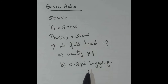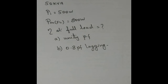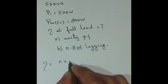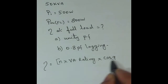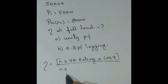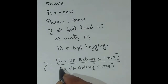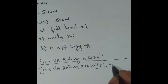We have two cases of power factor — unity power factor and 0.8 power factor lagging — but the load is full load in both cases. The formula for efficiency is: efficiency equals n × VA rating × cos φ, divided by n × VA rating × cos φ plus losses, where losses are iron loss (P_i) plus n² × full load copper loss (P_cu).